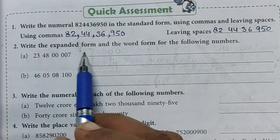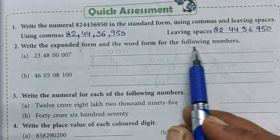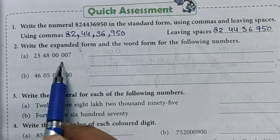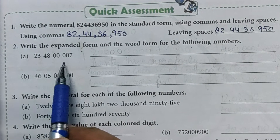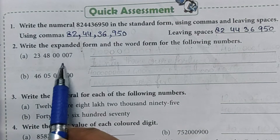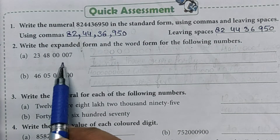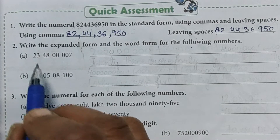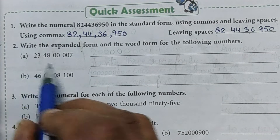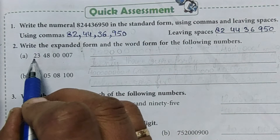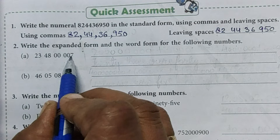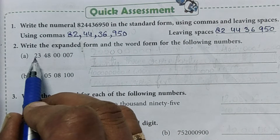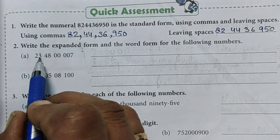Now write the expanded form and the word form for the following numbers. So let's start. To write the expanded form, for whichever digit we take, the digits after it will be replaced with zeros. 8 is at 23 crore.